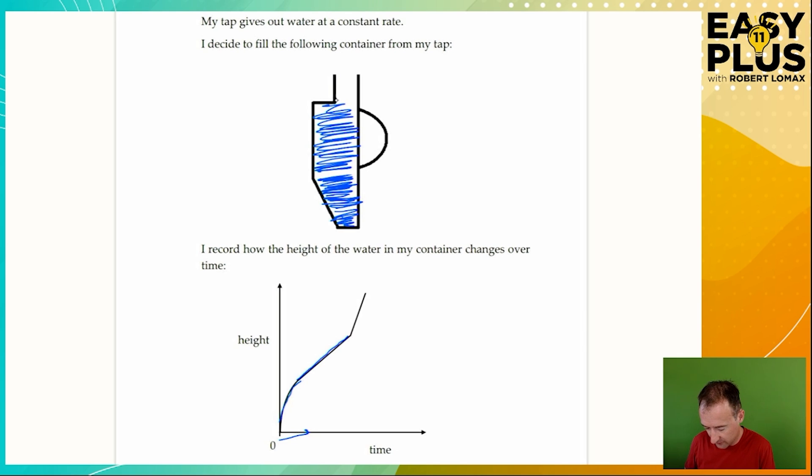Then the water reaches this bit here. And this bit is much narrower so suddenly the water is going to shoot up to fill it to the top. But again this bit has straight sides. So it's going to be a consistent rate of fill but much faster. In other words it gains a lot of height in very little time.